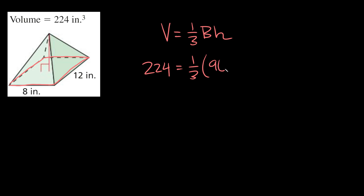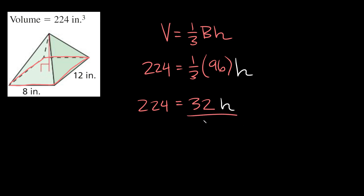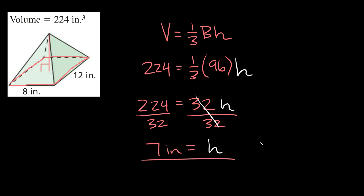We'll plug in 96 for the area of the base. And since we don't know the height, we'll have H right there. So we get 224 is equal to one third times 96 — or 96 divided by three — which is equal to 32, multiplied by the height. Lastly, we divide both sides by 32, and we're left with H is equal to 224 divided by 32, which is seven. Don't forget your units — we're working with inches, so the height is seven inches.